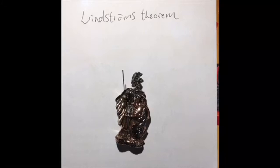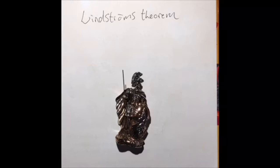Let k be a cardinal. An extension of first-order logic is said to have Löwenheim-Skolem number k if for every set gamma of sentences of L, if gamma has a model and the length of gamma is less than or equal to k, then gamma has a model of size at most k.